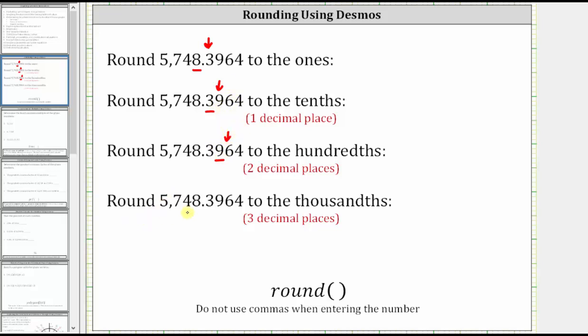And finally, the six is in the thousandths place value because of the four to the right we round down. And now let's find the rounded values using desmos.com.